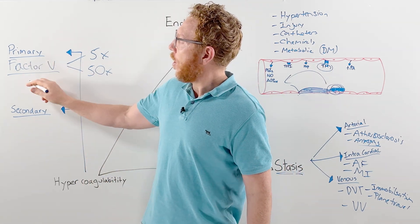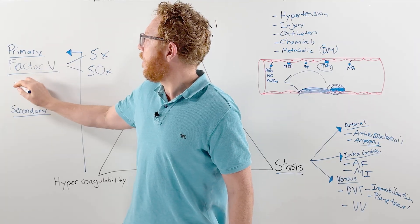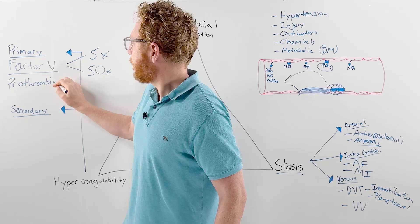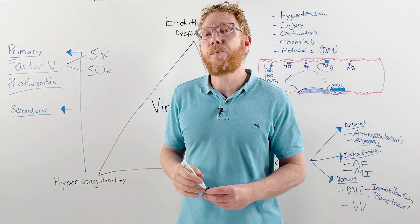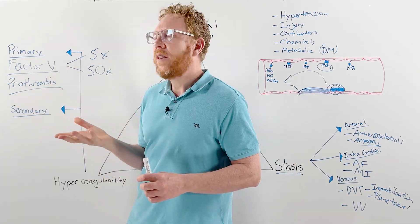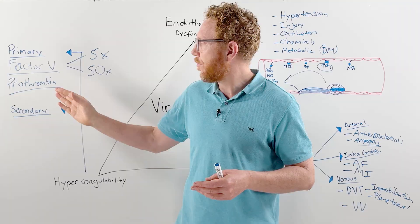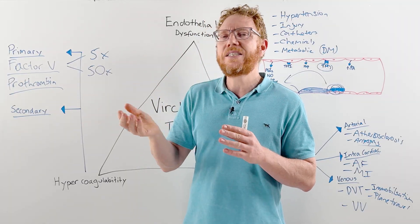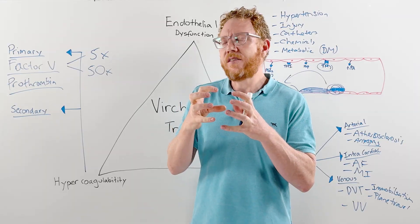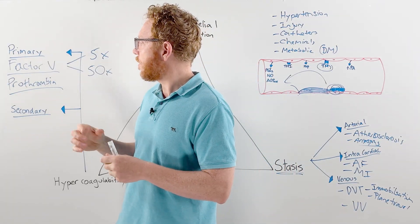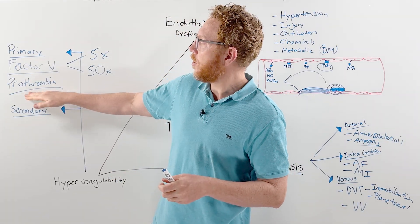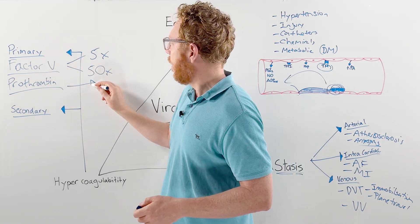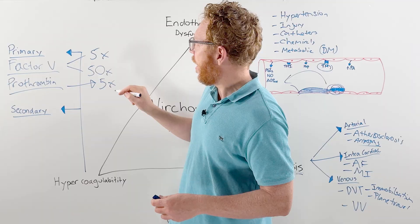Another factor that can go wrong in the primary or inherited is prothrombin. A prothrombin mutation increases the production rate of prothrombin, therefore more likely the activation of thrombin. This is only one step away, because this is factor II, only one step away from the activation of fibrin, which is the final clotting process. So increased production of prothrombin through gene mutation increases the likelihood of clotting by five-fold.